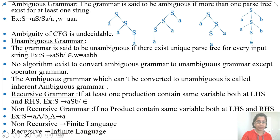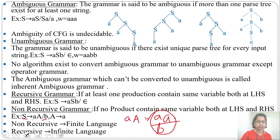From this grammar you can generate aa, and from A you can generate a. So simply you are generating aa, or from S you can generate b — just two strings. This is a finite language. So non-recursive means it is a finite language, and a finite language is also a regular language.